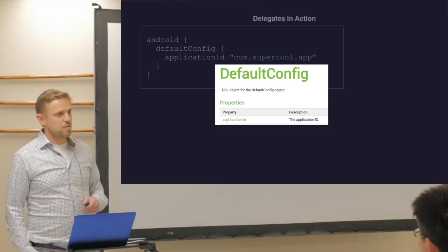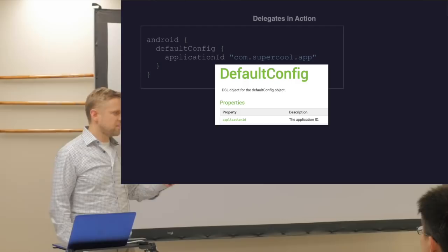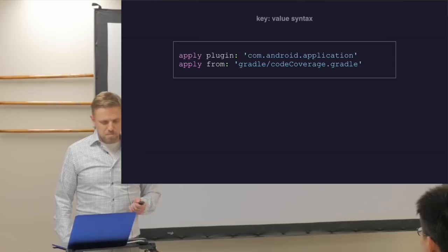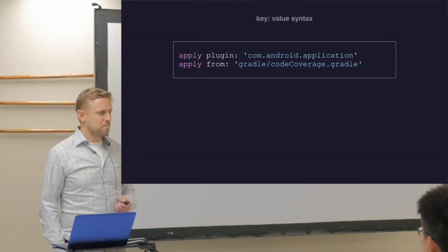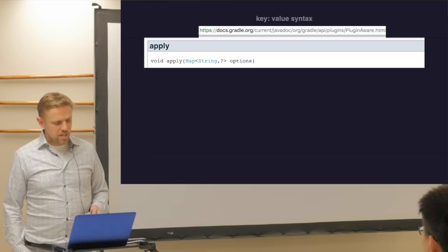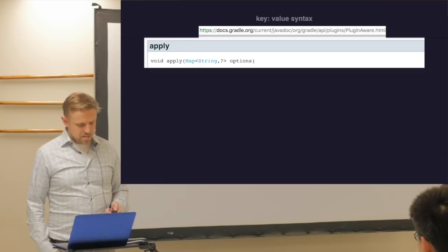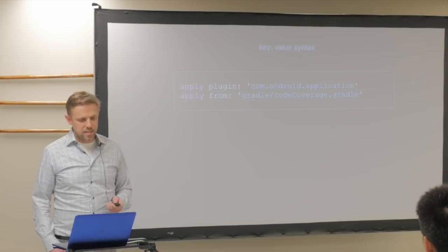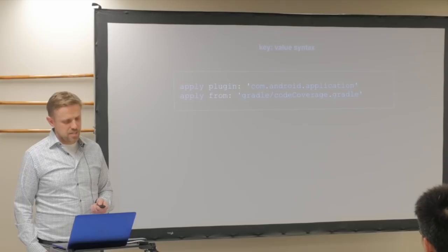Starting in Android Studio 3.0 you can really Command-click and follow these things around, which helps a lot. What about 'apply plugin'? This is using the key-value syntax of Groovy. It's calling the apply function on a PluginAware class, and it basically takes a map — plugin is the key, com.android.application is the value, and it creates a map and passes that into the function. There are also from, plugin, and to parameters — you can change what it's applied to.